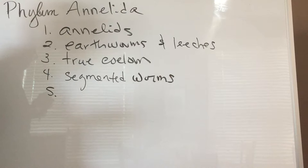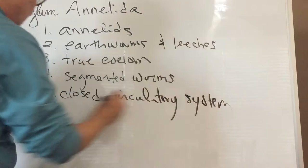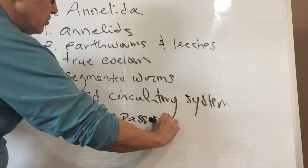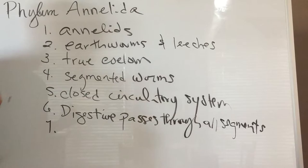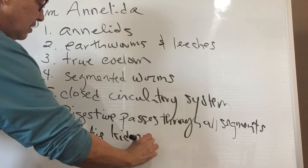As a closed circulatory system, the digestive system passes through all segments. Some of the structures that are repeated within each segment are some structures that are actually primitive kidneys, as well as nervous tissue.